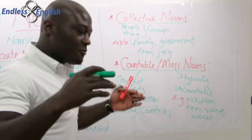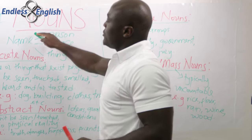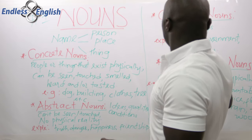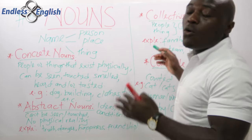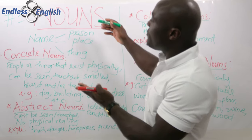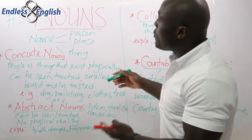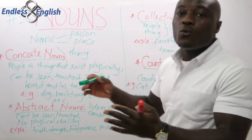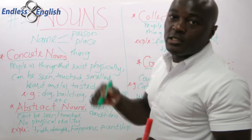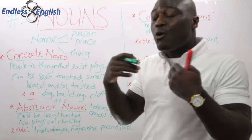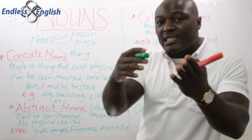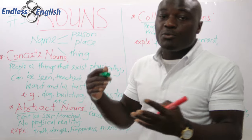So remember, this is the first step of parts of speech that we are learning — going through nouns and seeing the various types: concrete nouns, abstract nouns, collective nouns, and countable and uncountable (mass) nouns. With this, I feel we've covered nouns in their entirety and you can go ahead to start using nouns and figuring out which kind of noun a word falls under. I'd like to hear your comments below on how we can improve our lessons or what you feel can be done to improve this channel.